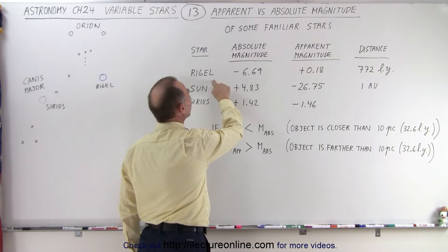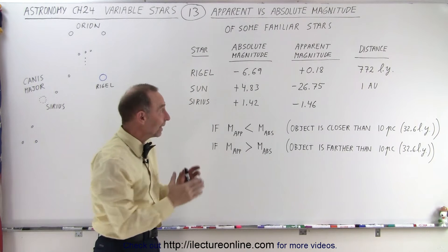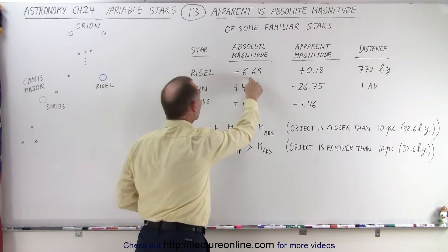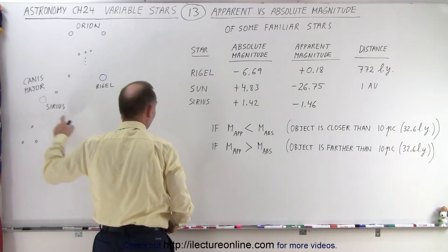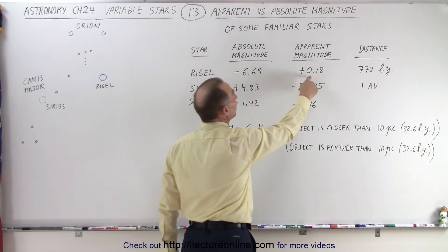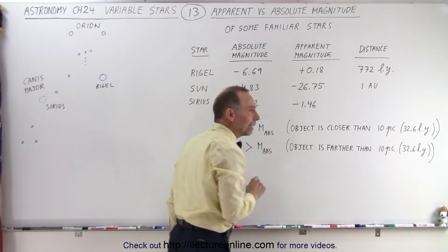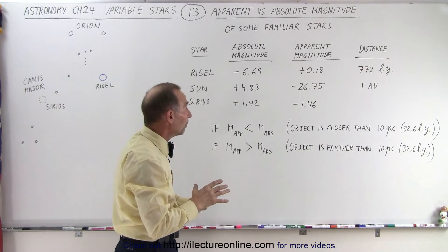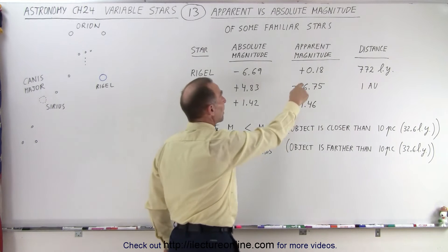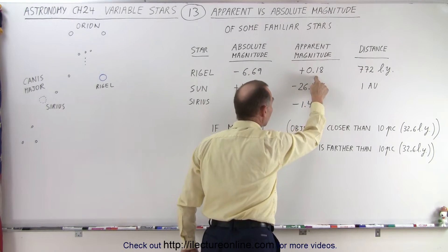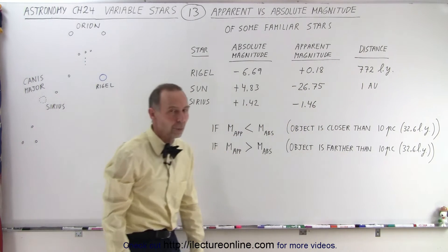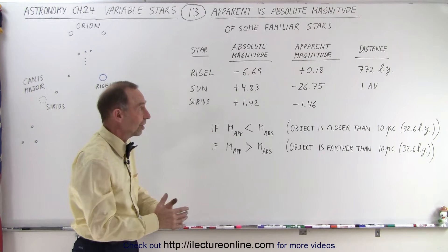Absolute magnitude for Rigel, minus 6.69. So again, that's if we were to place Rigel at a distance of 10 parsecs, that's how bright it would appear. It would be much, much brighter than Sirius, which is the brightest star in the sky. So Rigel is a really bright star. But the apparent magnitude is 0.18, a positive 0.18. That's still one of the brightest stars in the sky. But it would be much brighter if we brought it closer to a distance of 10 parsecs. The reason why the apparent magnitude is a much larger number than the absolute magnitude is because it's at a distance of 772 light years, which is way more than 32.6 light years, which is 10 parsecs.